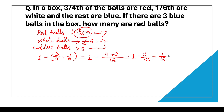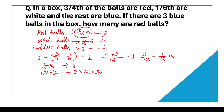So one-twelfth part of the total balls are blue balls. But it is given that the number of blue balls is three. So one-twelfth equals three. The whole number of balls equals three multiplied by twelve, which equals thirty-six. So thirty-six is the total number of balls.